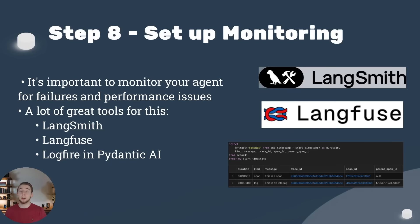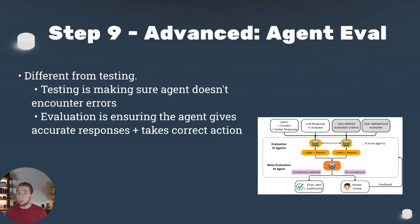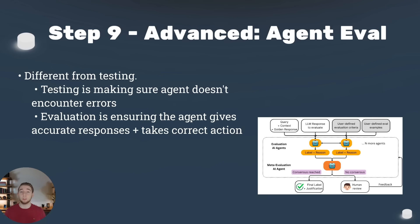One of the more advanced concepts that can fit into many parts of this process is agent evaluation — one of the harder things to do with agents, and very different from testing. Testing is making sure the agent doesn't encounter errors like the application crashing or the LLM not being able to process a request. Evaluation is ensuring the agent actually gives correct responses and takes correct actions — you give it certain inputs and ask: is it doing the right thing, is it giving me an acceptable answer? That is evaluation, and it's also very, very important.